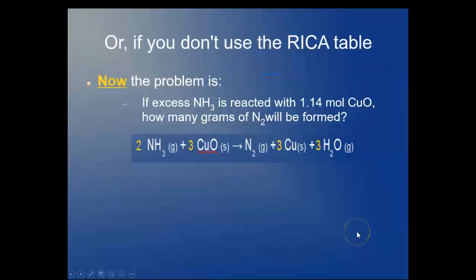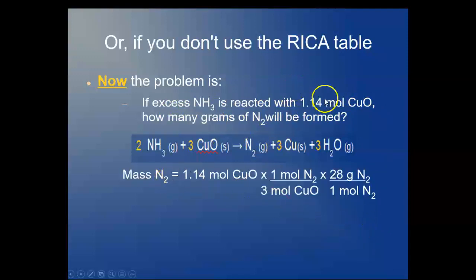Now if you don't use the RECA table, the problem is if excess ammonia is reacted with 1.14 moles, because we know this is limiting now, how many grams of nitrogen would be formed. And there we simply multiply the 1.14 moles by the 1 to 3 ratio in moles of nitrogen and copper oxide, and we multiply this. You say, well, why didn't we just go right to this? Because the RECA table tells us what's in excess and what's limiting. So 10.6 grams to three significant digits.